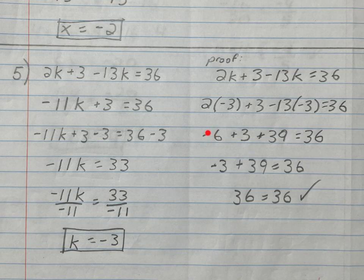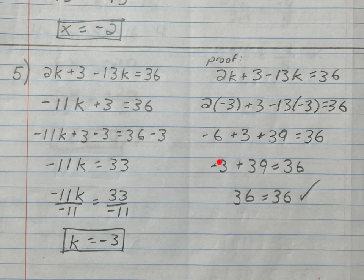Now do the multiplication: 2 times -3 is -6. A lot of people have trouble here: -13 times -3 — negative times negative is positive, 13 times 3 is 39, so that becomes +39. So we have -6 + 3 + 39 = 36. Left to right: -6 + 3 is -3, then -3 + 39 is 36. So 36 = 36. Check!